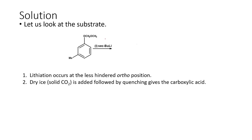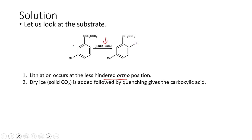When we talk about secondary butyllithium, it is a little bit bulkier compared to n-butyllithium. So here the lithiation occurs mainly at the less hindered ortho position. When the less hindered ortho position undergoes lithiation, we have multiple positions — we can assume there is one here, another one here, and also another one here.